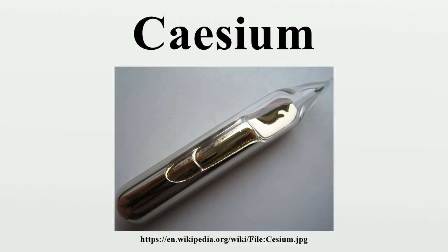Cesium chloride crystallizes in the simple cubic crystal system, also called the cesium chloride structure. This structural motif is composed of a primitive cubic lattice with a two-atom basis, each with an eightfold coordination. The chloride atoms lie upon the lattice points at the edges of the cube, while the cesium atoms lie in the holes in the center. This structure is shared with CsBr and CsI, and many other compounds that do not contain Cs. In contrast, most other alkaline halides adopt the sodium chloride structure.